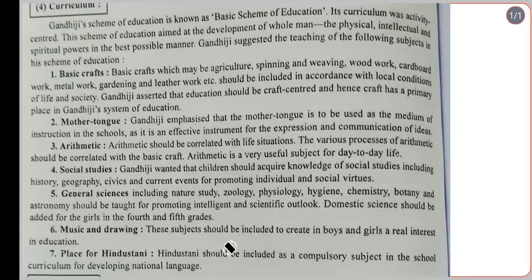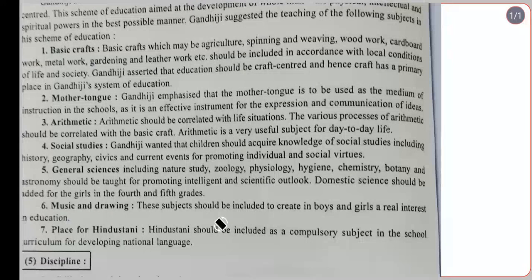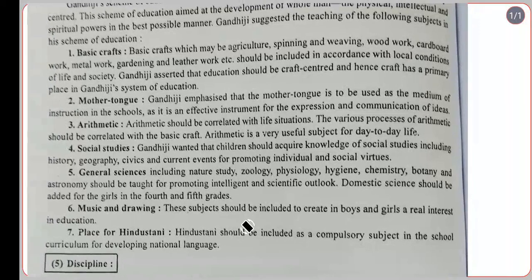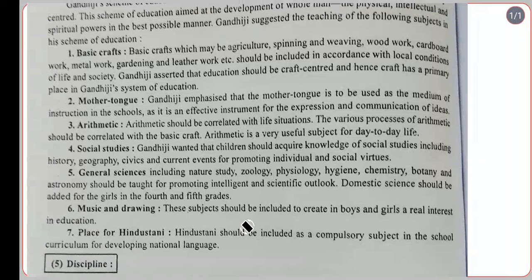The curriculum should also include geography, current events and affairs, and social virtues to promote the general welfare of the individual. General science, including natural study, geology, physiology, hygiene, chemistry, botany, and astronomy, should be taught for promoting intelligence and scientific outlook. Domestic science should be added for girls in the fourth and fifth grades.